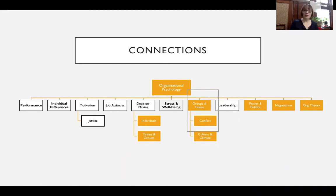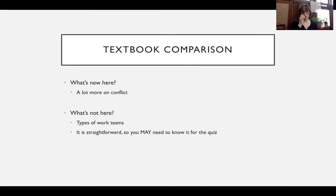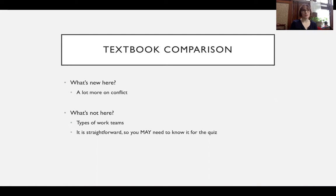Let's talk about the textbook before we go on. What's new here? There's a lot more on conflict. There are a few additional slides that include content that doesn't get covered in the textbook, because there's a lot that we could do on groups and teams — indeed, you can take an entire class on group and team functioning that would last an entire semester. What's not here that's in the textbook is the section that talks about the types of work teams. It is very straightforward, so I didn't feel the need to reiterate it, but you may need to know it for the quiz. So don't ignore that part of your textbook just because it isn't covered here.